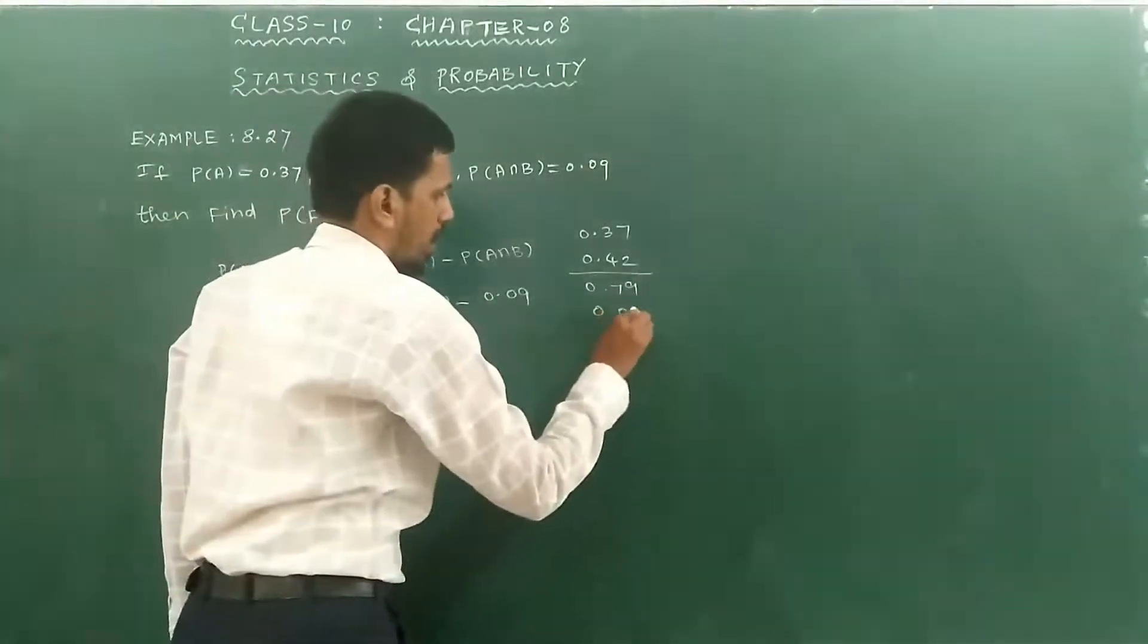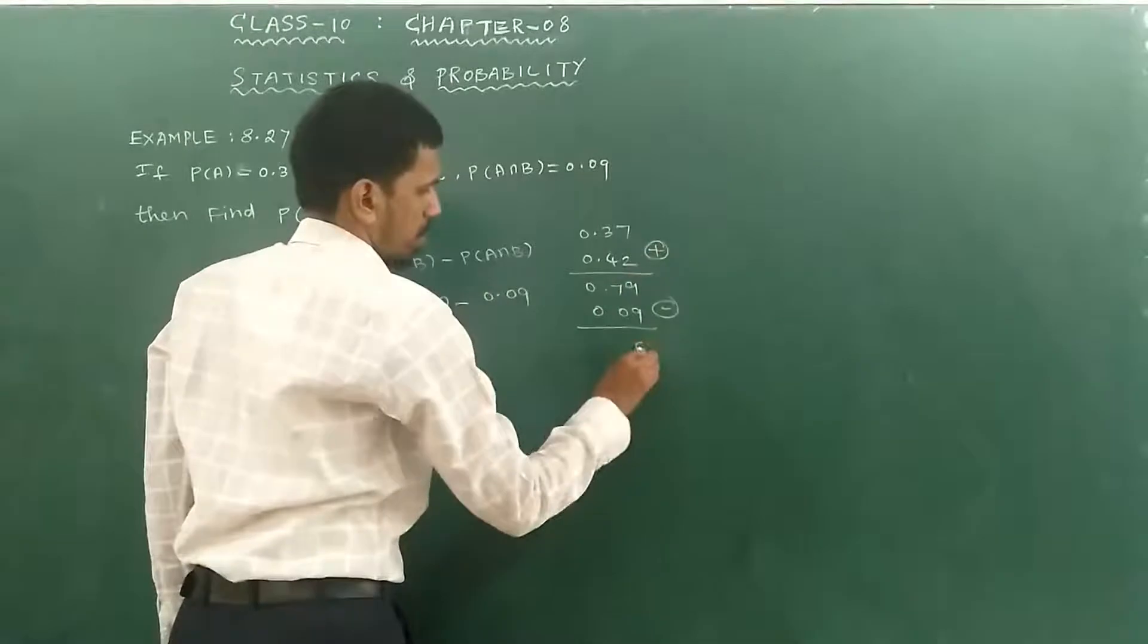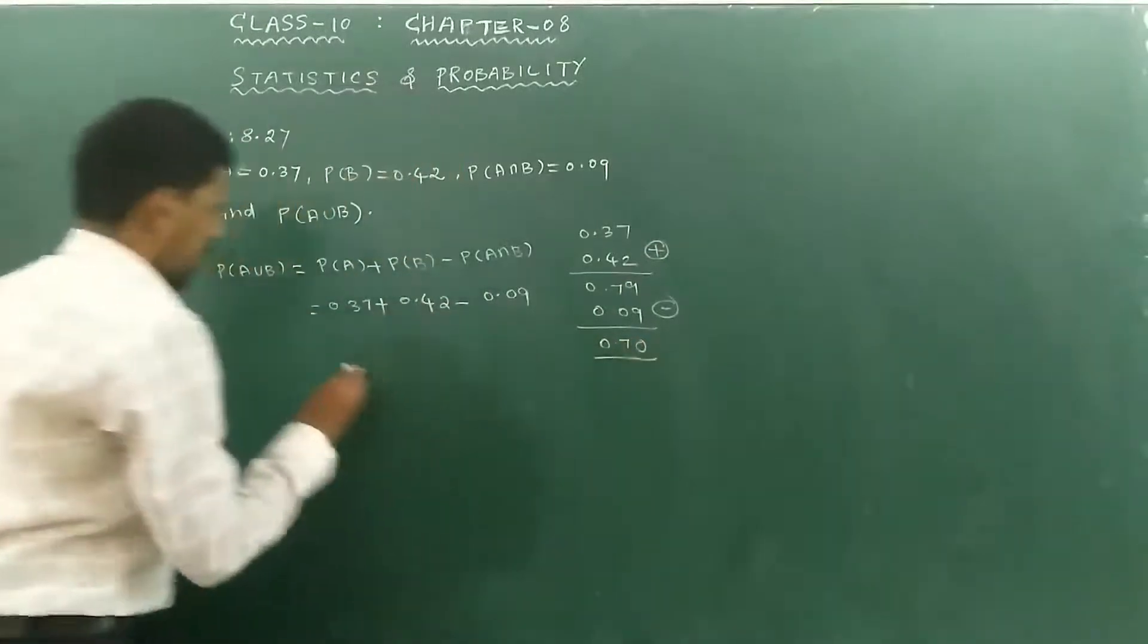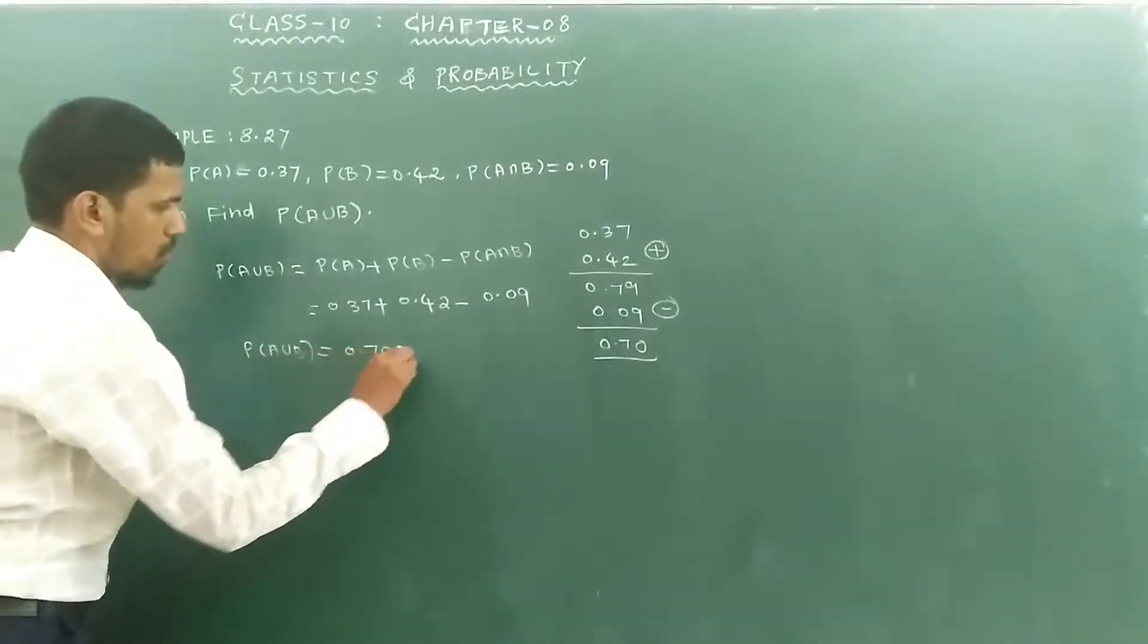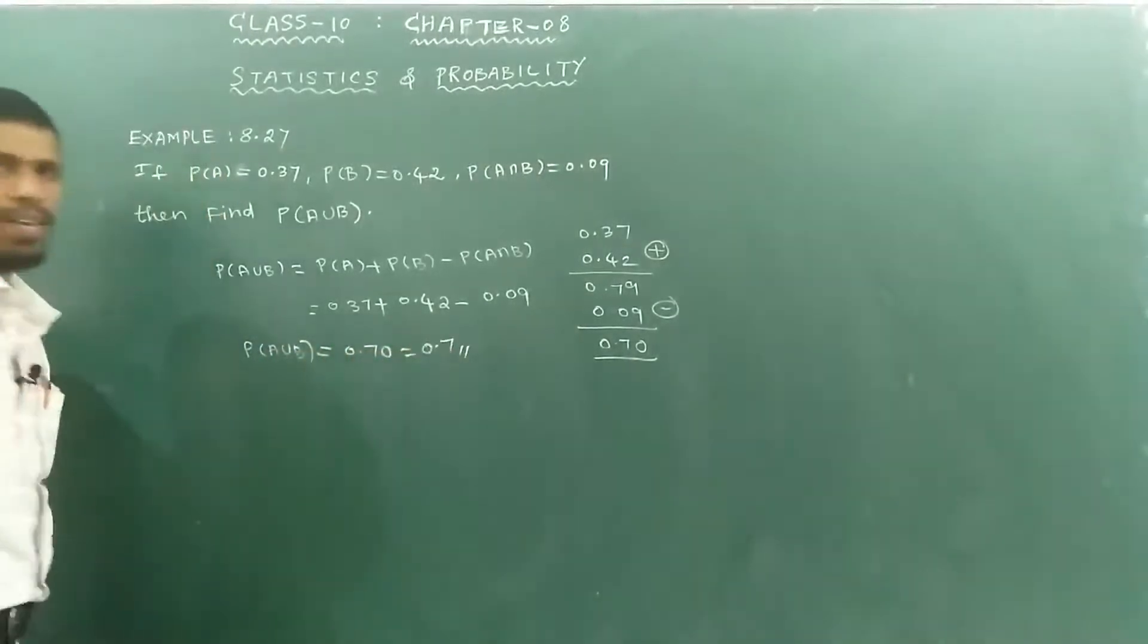Then we subtract 0.09. So P(A union B) equals 0.70, or 0.7. That's the result.